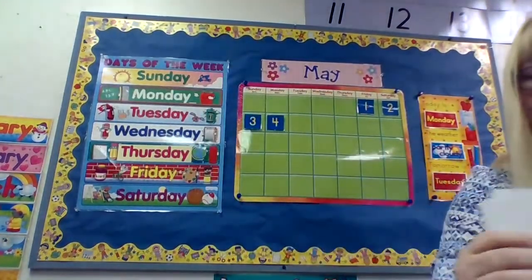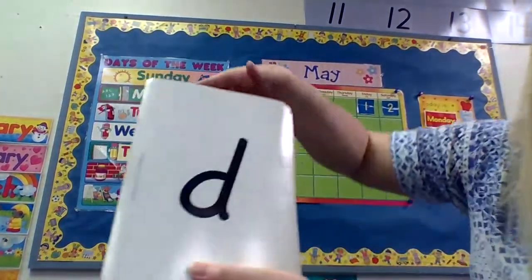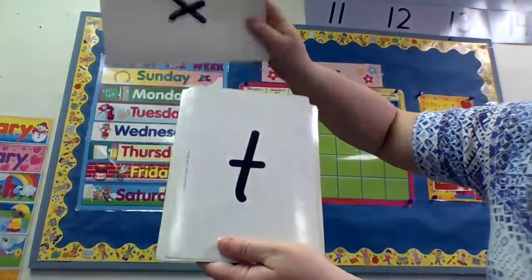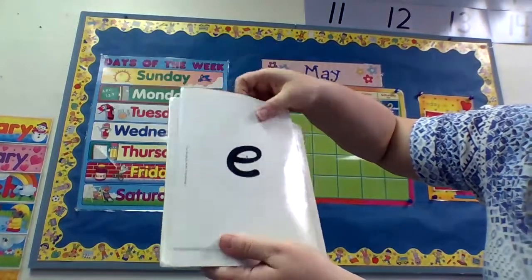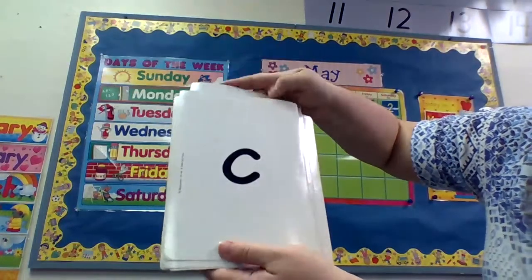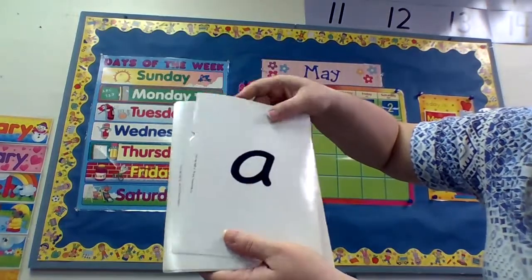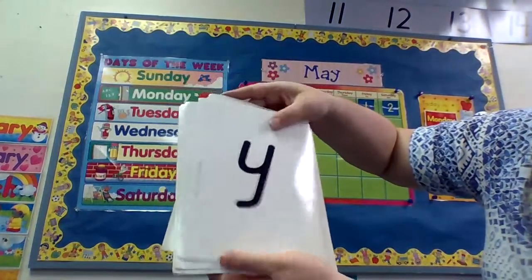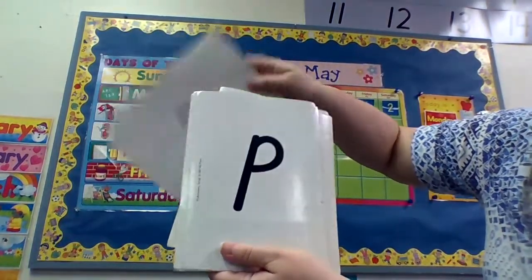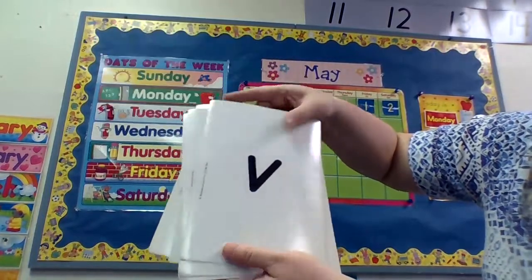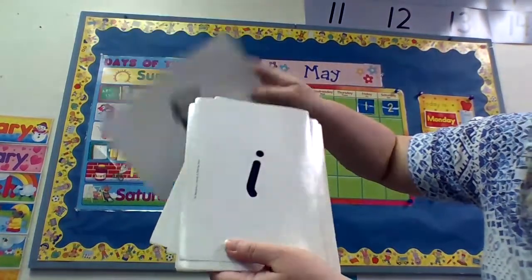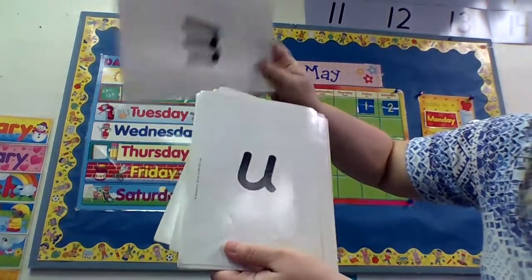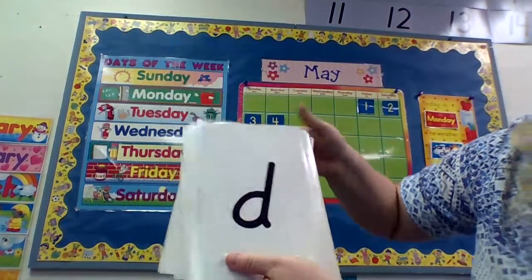Now back to K — let's do our lowercase. Ready? D, n, g, x, t, q, e, h, c, f, a, j, l, s, y, r, p, o, v, w, i, b, z, m, u, k. Back to D.